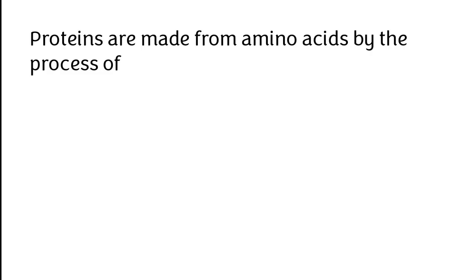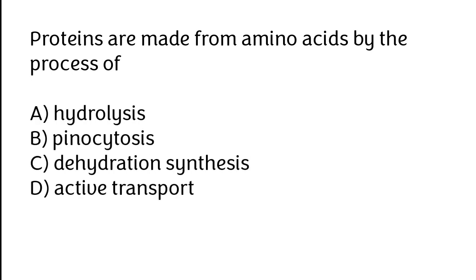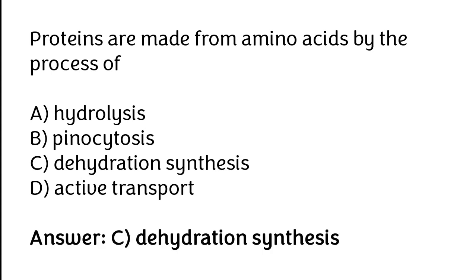Proteins are made from amino acids by the process of: hydrolysis, pinocytosis, dehydration synthesis, or active transport. The correct answer is option C. Proteins are made from amino acids by the process of dehydration synthesis.